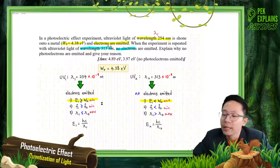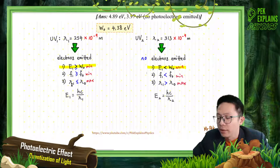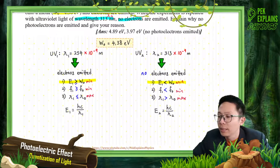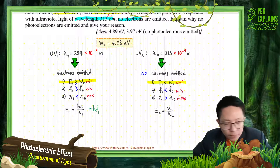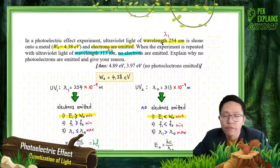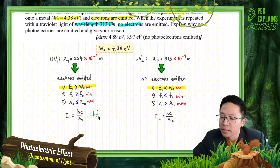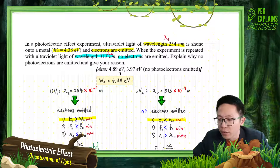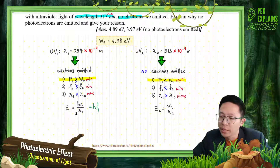Let us calculate the energy of the photon. The energy of a photon is E = hc/λ. We use hc/λ instead of hf because the question gives us the wavelength. If the question gives you frequency, you use hf. But since the question gives us lambda, we use hc/λ.